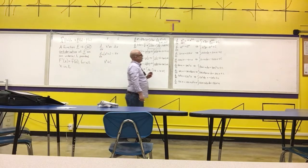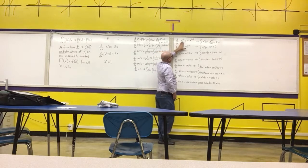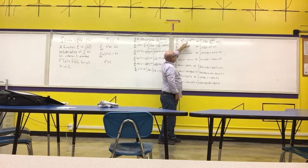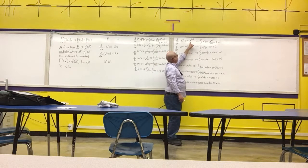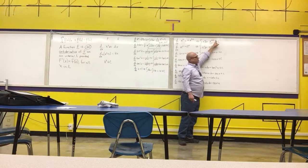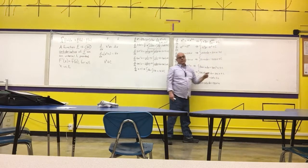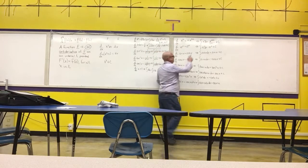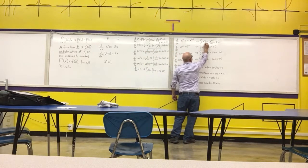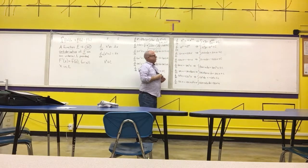Starting on the right-hand side of the board: we had the power rule — x to the n, we brought down the exponent and subtracted 1. To undo that, we add 1 to the exponent, divide by the new exponent, and add C. The important restriction here is that n cannot equal negative 1, because we'd be dividing by 0. We'll have another rule to handle that case.